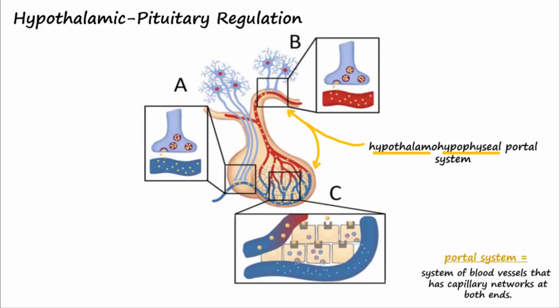The hypothalamohypophyseal tract refers to the axonal communication between the hypothalamus and the posterior pituitary, or neurohypophysis. The area labeled A in the image shows the cell bodies of the hypothalamohypophyseal tract. These hypothalamic neurons transport hormones down their long axons to deposit them into the blood supply shown in the inset for A.